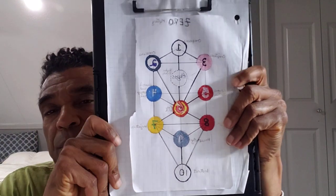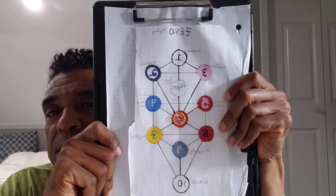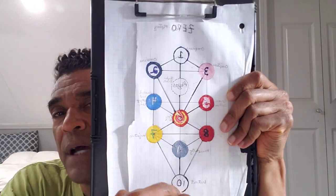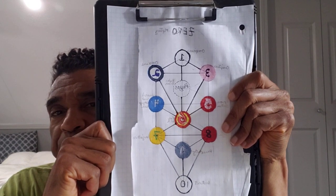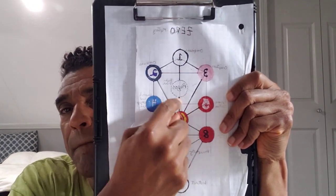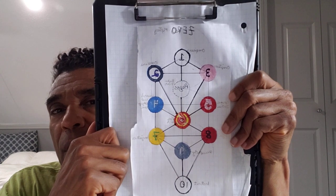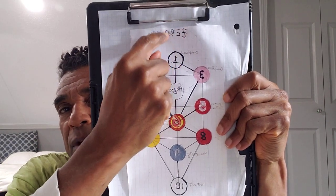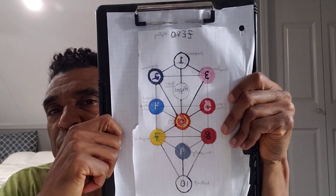Today we're looking at number 134. The Tree of Life is a map of our consciousness. Each one of the circles or spheres on the tree is an aspect or faculty of our consciousness, and there are 12 of them — numbered 10 through zero, plus the abyss — for a total of 12. When we're talking about number 134, we find ourselves way up at the top at the zero sphere.